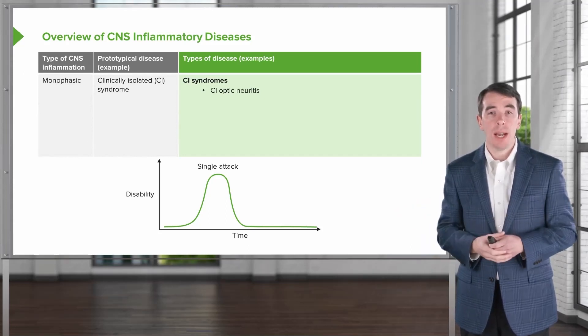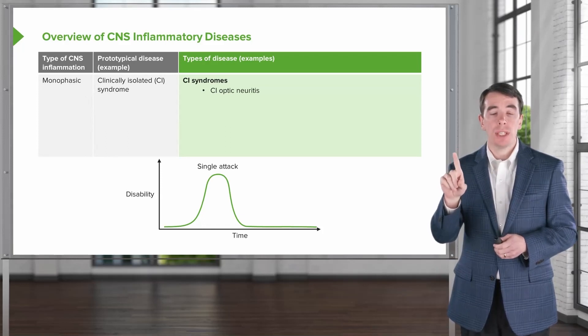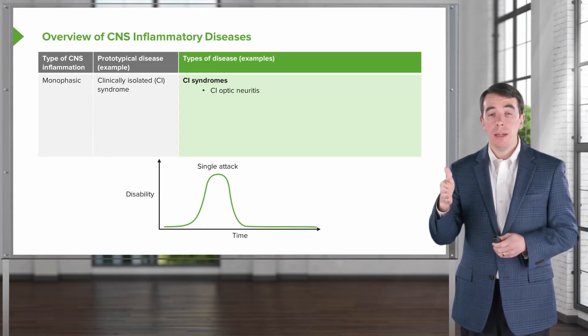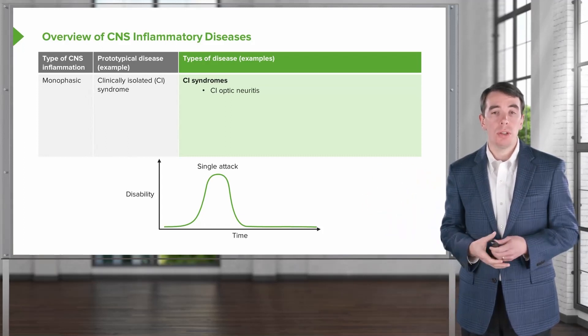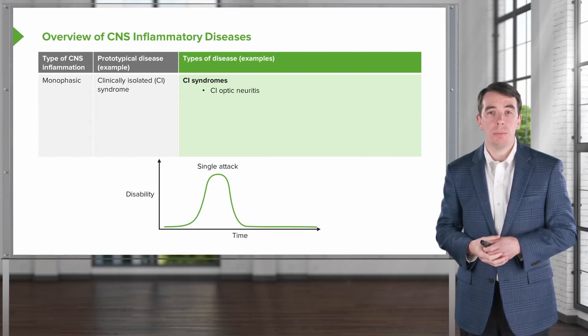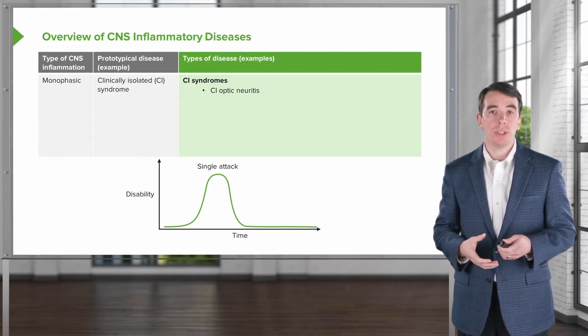In clinically isolated optic neuritis, there's one event. It's a monophasic illness. We worry in a patient's first presentation that they could develop new events and watch closely for those and look for signs of evidence of possible recurrence or risk of recurrence.